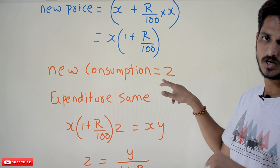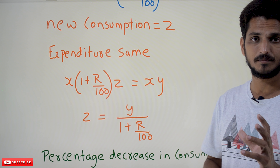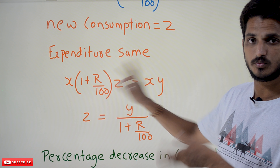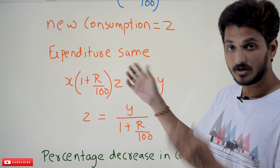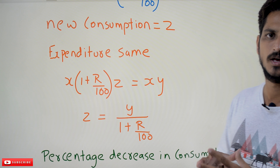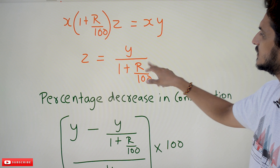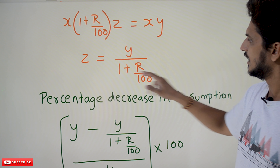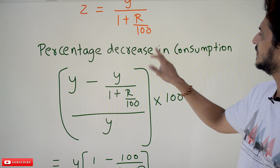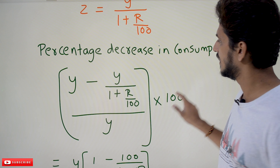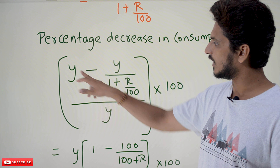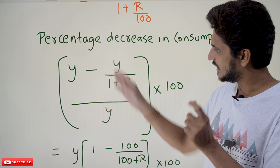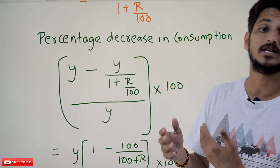We assume the new consumption is equal to z. Since the expenditure should remain the same, new price times new consumption equals x times y. Cancelling out the x values gives z equals y divided by (1 plus r/100). This is the new consumption. Now we need to find the percentage decrease in consumption, which is actual minus new consumption, divided by actual value, multiplied by 100.